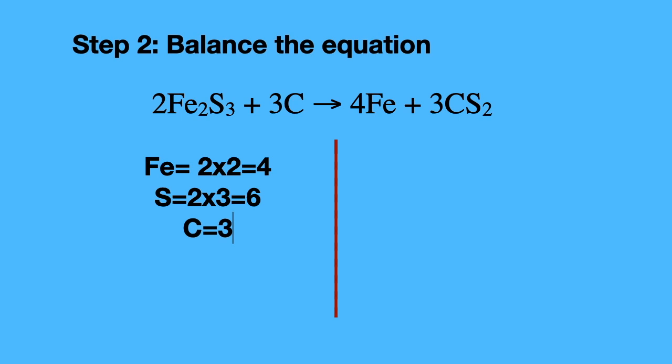Next we write down elements on both sides and total up the amount for each element. Lastly you total it up by multiplying the coefficient, the leading number, by the subscript which is the bottom number of a variable.